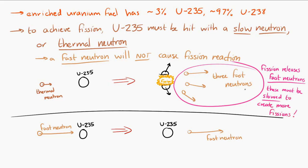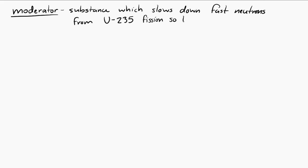This is accomplished by using something called a moderator. A moderator is a substance which slows down fast neutrons that come out of the uranium-235 fission, so that they become thermal neutrons, which can then cause more fissions. Water and graphite, which is a type of carbon, are common moderators.